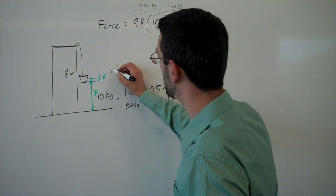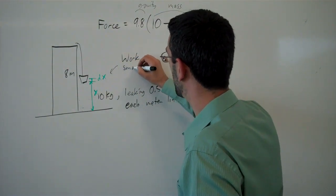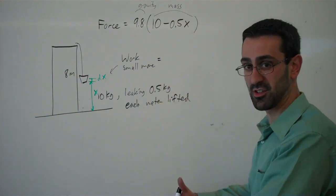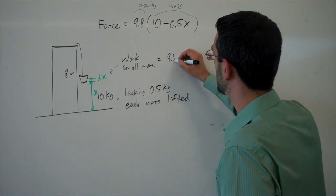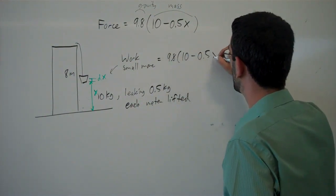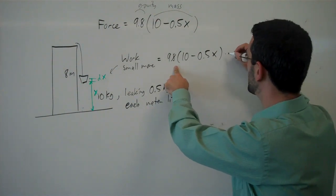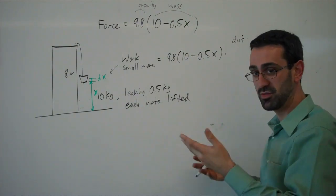So for this small move, the work for this small move will be the current force on the bucket, which we just found. Given any x value, the force will be this times the distance that we have moved the object.